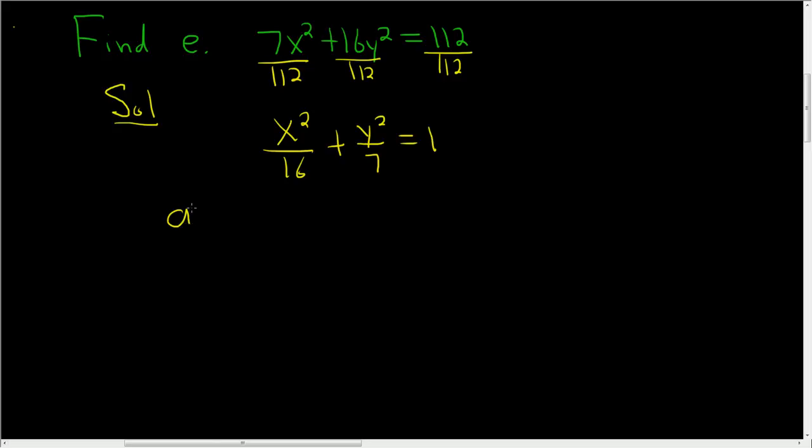So in this problem, a squared is equal to 16. A squared is always the bigger number for an ellipse. This is an ellipse, and you know that because you have a plus sign. So for an ellipse, a squared is the bigger number, and b squared is 7.